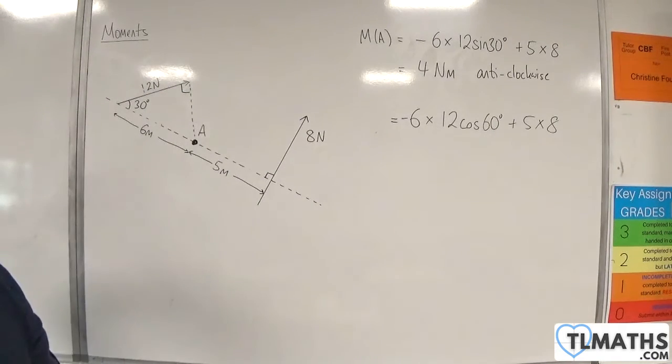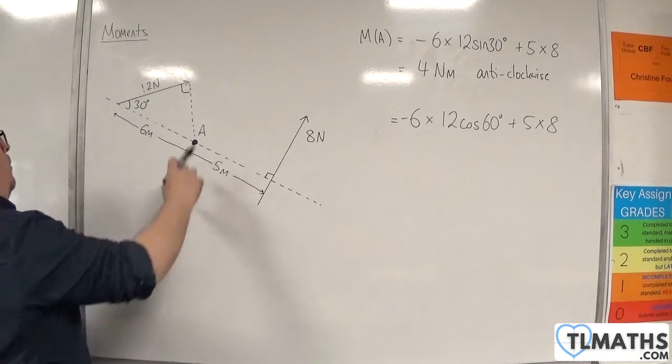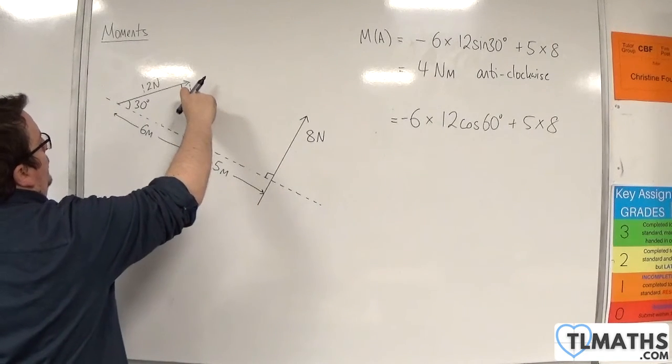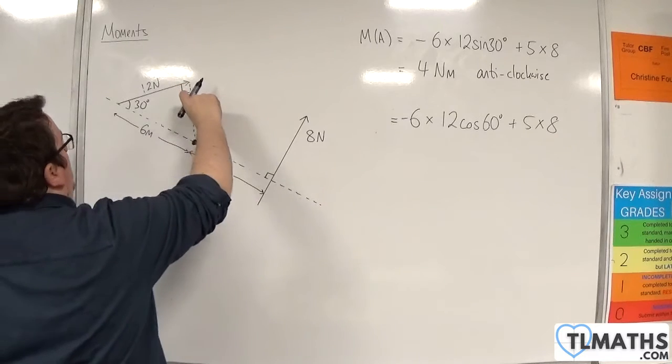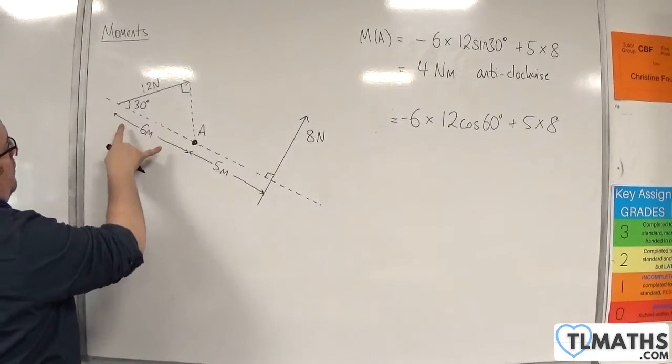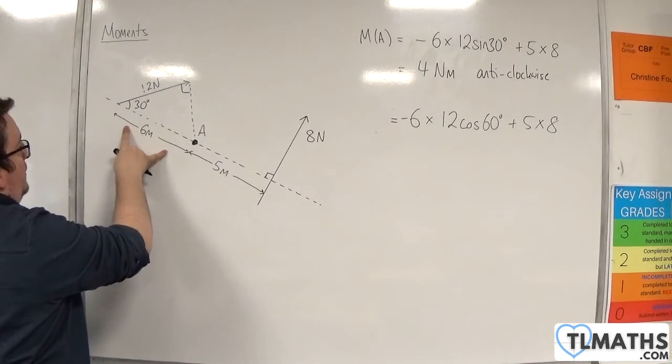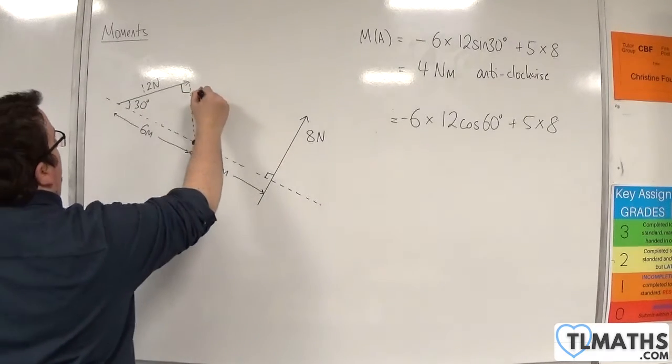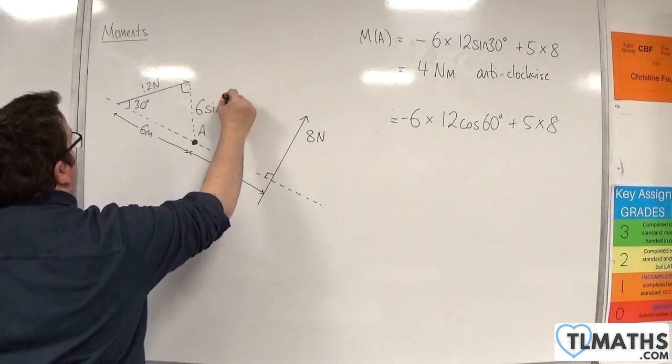And so it's all about working out this distance here. OK, so that distance is going to be, well, we've got this hypotenuse 6, and this is the opposite side with that angle. So this is 6 sine 30.